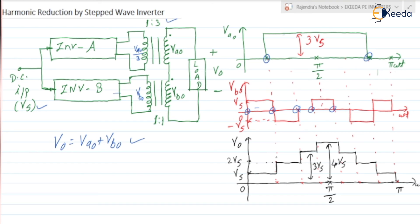If you check this waveform, we are having multiple number of steps — that is why it is known as the stepped wave inverter. Nowadays, research is ongoing for multi-level inverters, and this is an example of that type of inverter. Definitely this will be more closer to a sinusoidal waveform, because here the minimum starts at 0, then goes on increasing, reaches the peak, and again goes on decreasing — so the waveform is more closer to sinusoidal compared to a square wave or quasi-square wave.